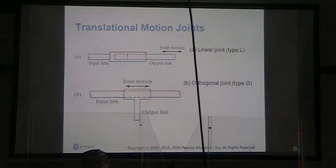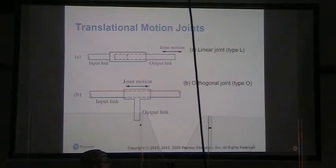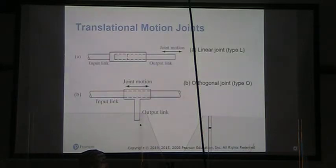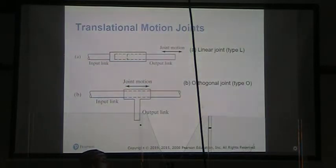For translational motion joints, we have an input link which is rigid and an output link that can slide back and forth — that is the linear joint type L. On an orthogonal joint type O, we have an output link that slides along the input link, so it can move freely relative to the input link.